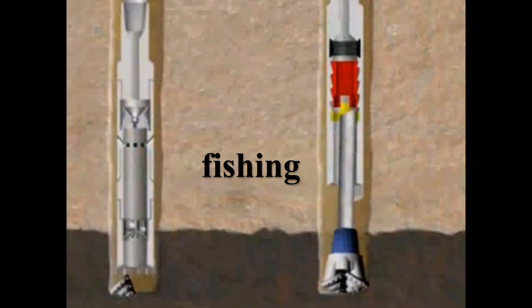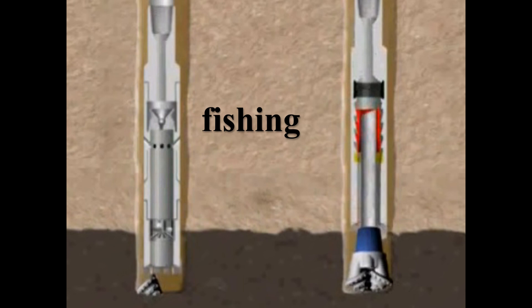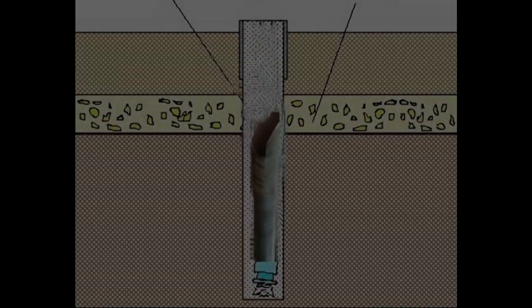The process of retrieving the stuck pipe is called fishing. Depending on the raggedness and position of the stuck pipe or fish, this fish may be able to be pulled out straight away or it may need to be dressed off or cleaned up.